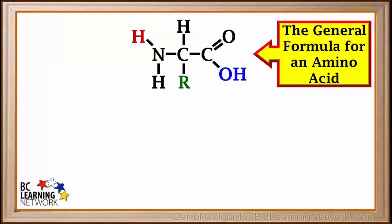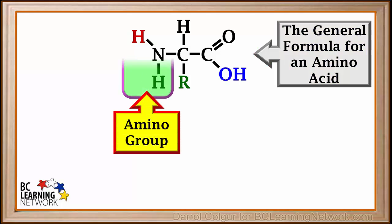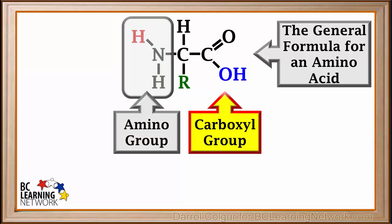The general formula for an amino acid can be depicted as a molecule like this. All amino acids have an amino group, which is NH2, and a carboxyl group, which is COOH. This can also be called the carboxylic acid group. It is the amino group and the carboxylic acid group that gives these compounds the name amino acids.